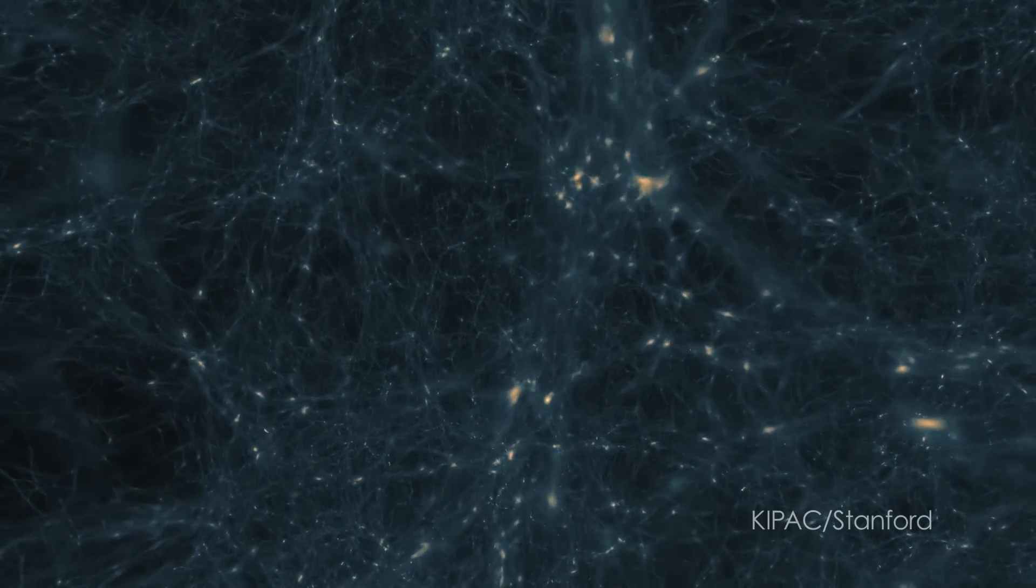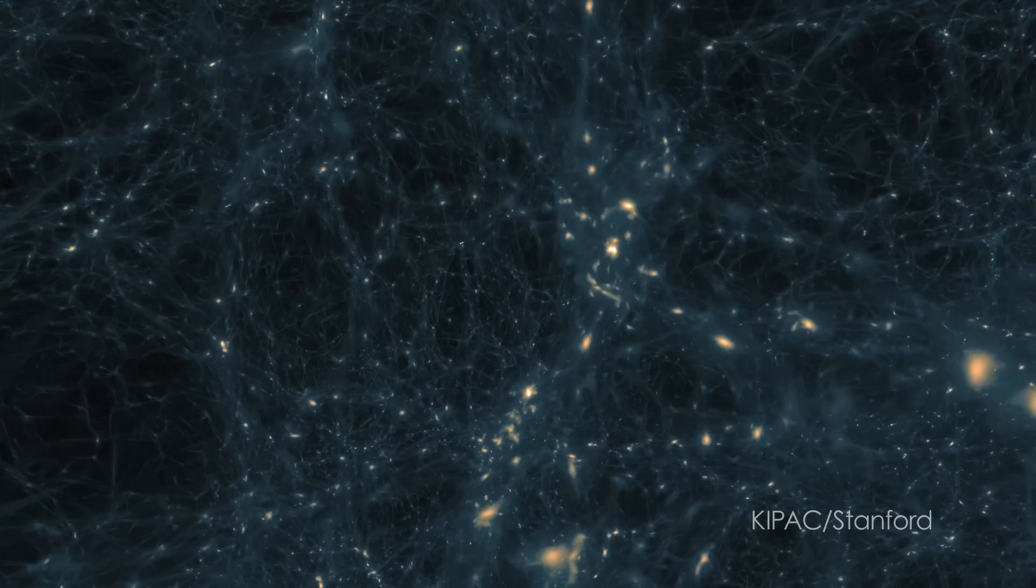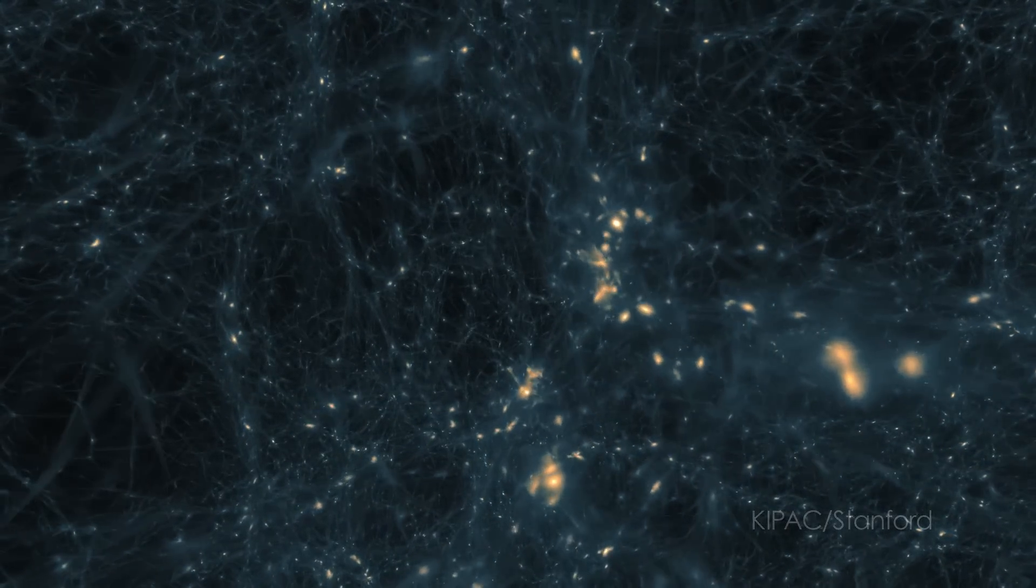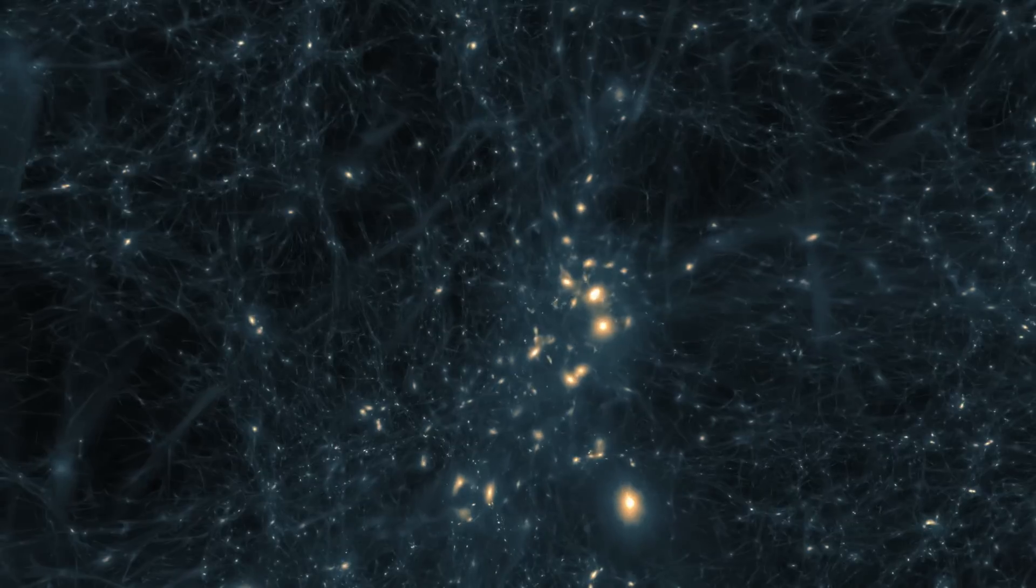Dark matter makes up about 27% of the cosmos. But so far, no one knows what it is. Dark matter neither emits nor absorbs light, and it interacts with the rest of the universe primarily through gravity.